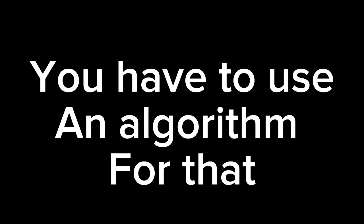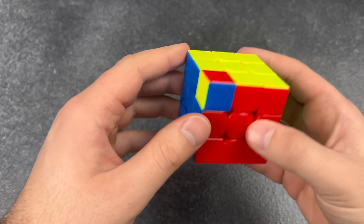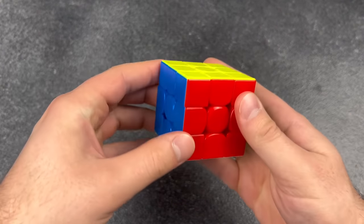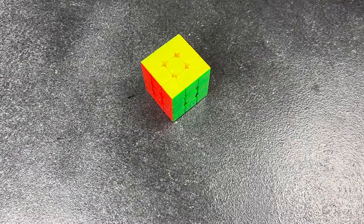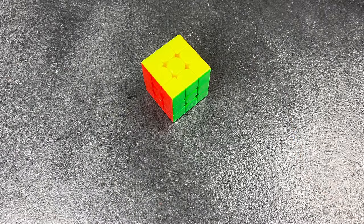What even is that? It's called a speed cube idiot. You have to use an algorithm for that. And done. What? I had a corner twist, hold on. Dude that's so cheating, you can't do that, you have to use the algorithm to solve it.